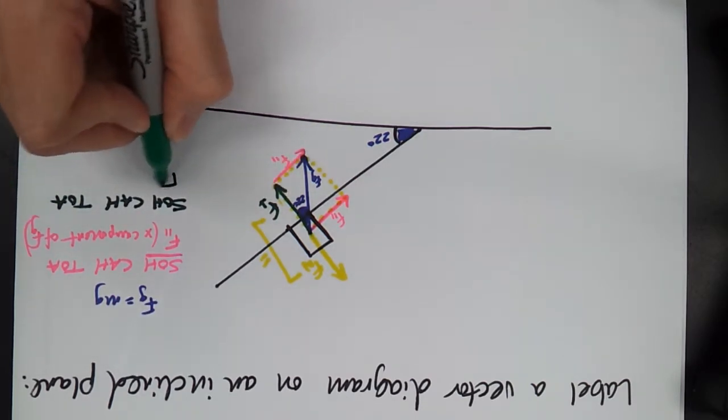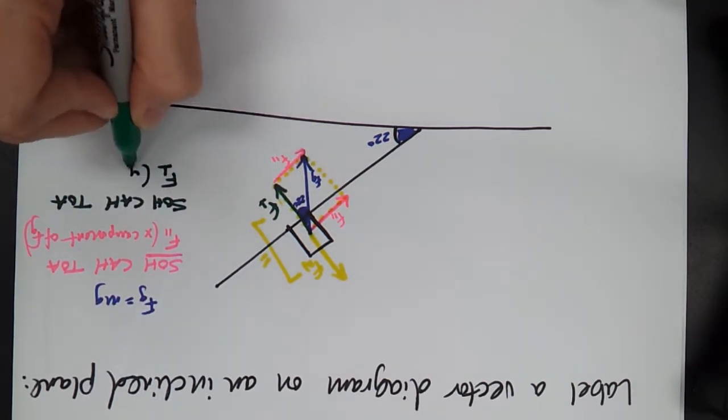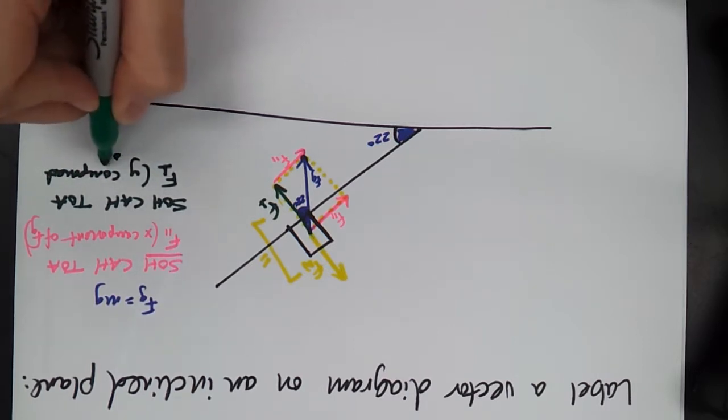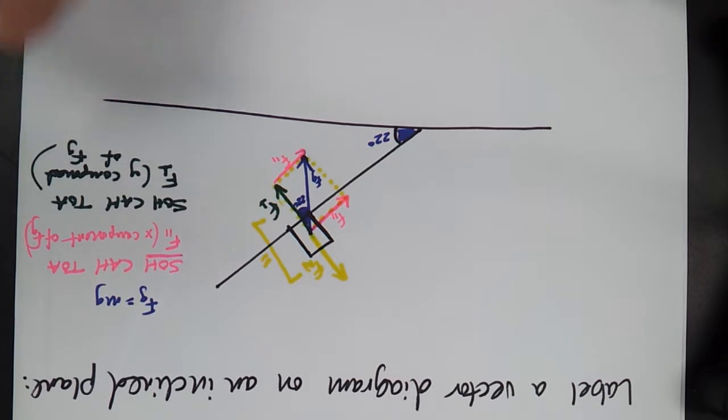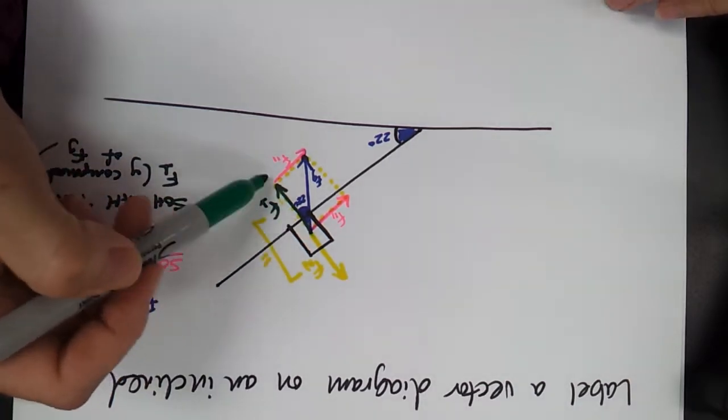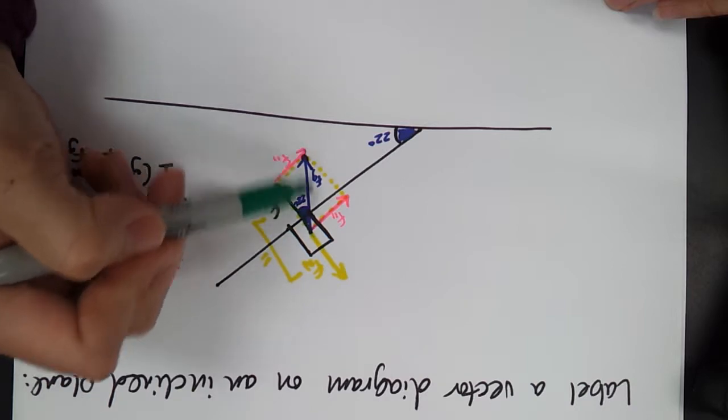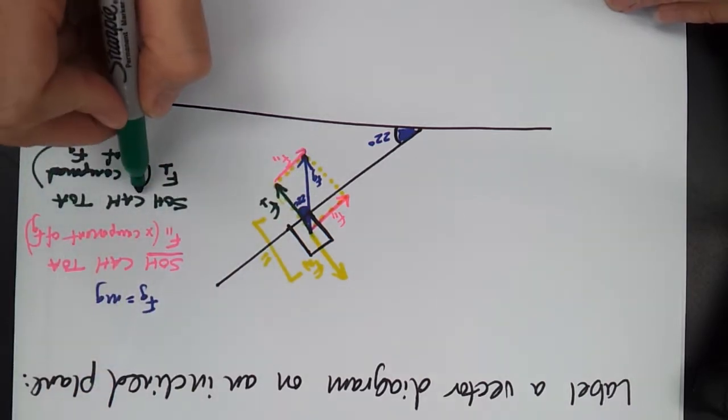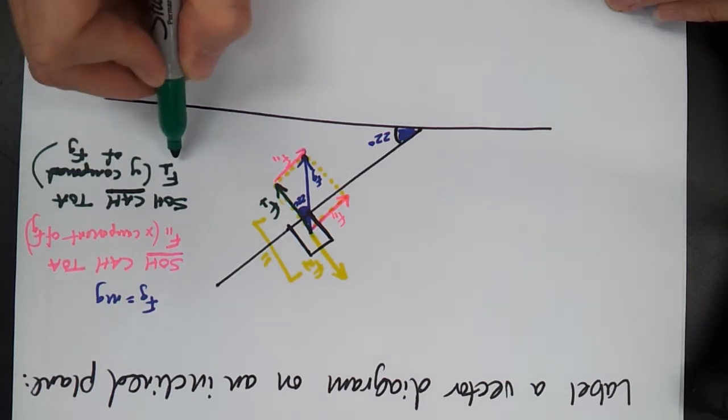And we say, well, we have this F perpendicular, which is really the Y component of Fg. In order to figure this out, and as the Y component, this is the adjacent angle, we would know the hypotenuse because we would know the mass. So as the adjacent angle, it's going to be the CAH for the F perpendicular.